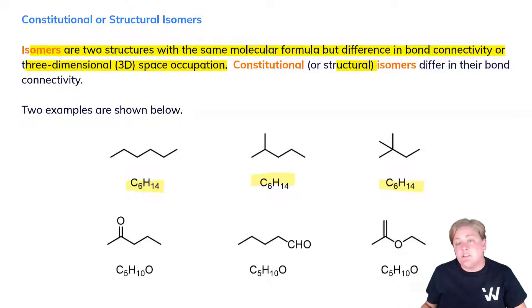Importantly in organic chemistry, as we start to introduce heteroatoms, we can also affect the type of functional groups present. Here we have a ketone. Here we have an aldehyde. And here we have an ether. All of these have the same molecular formula. All of them contain a single oxygen atom. And yet they are all different functional groups. And this is entirely because of constitutional or structural isomerism.